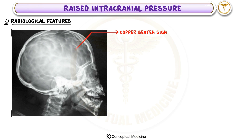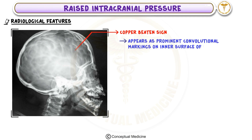One of the most important radiological features is the copper beaten sign, seen in skull x-rays. This appears as prominent convolutional markings on the inner surface of the skull.